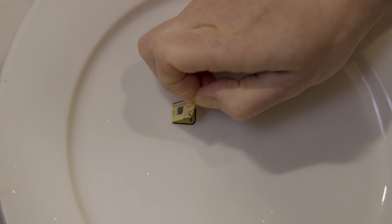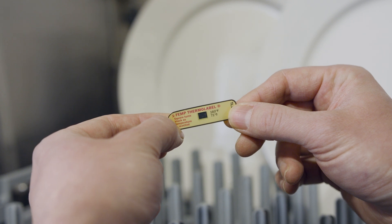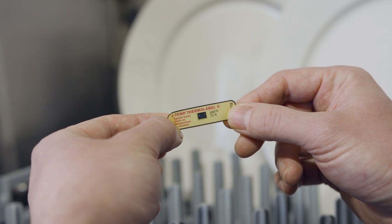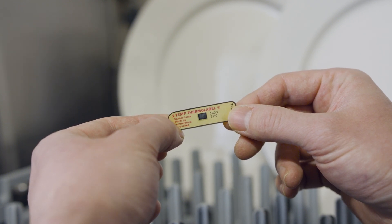Once the dish has cooled somewhat, the label is peeled off and discarded or saved for record keeping. The now blackened square will not revert back to white. It is a lasting record that the temperature was achieved.